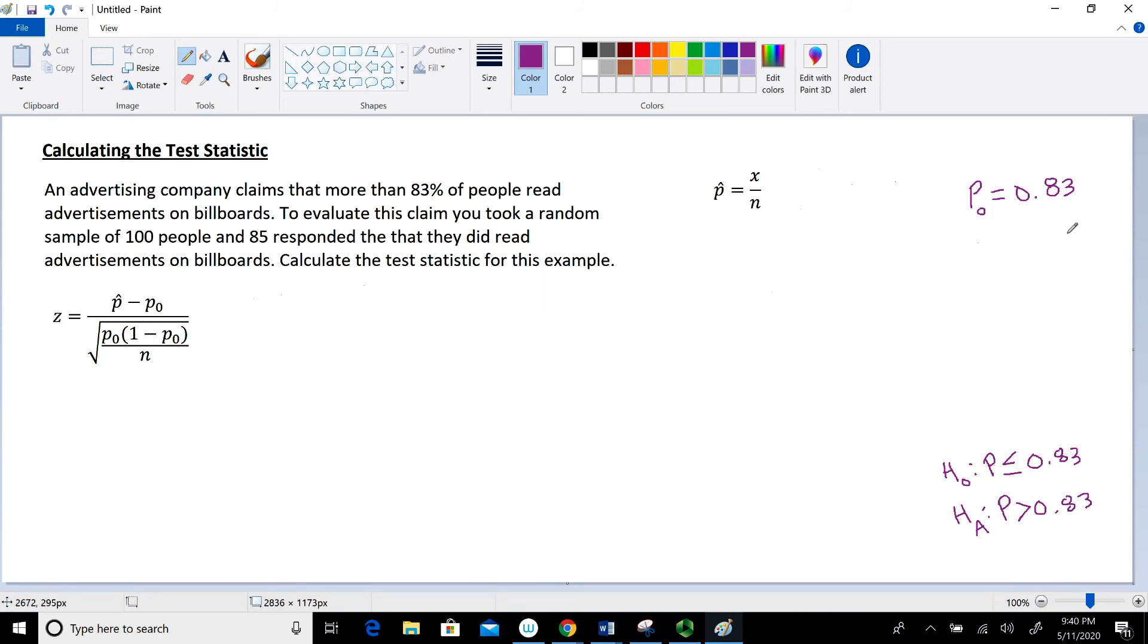So in this case right here, let's go ahead and identify some of the information. So first off, our sample size N is equal to 100. There are 100 individuals that were surveyed. Then we have the variable X. X is the number of favorable responses to that survey that relate to the population. So in this case, X are the 85 individuals that responded that they do look at billboards when they're driving or whatever, read the billboards.